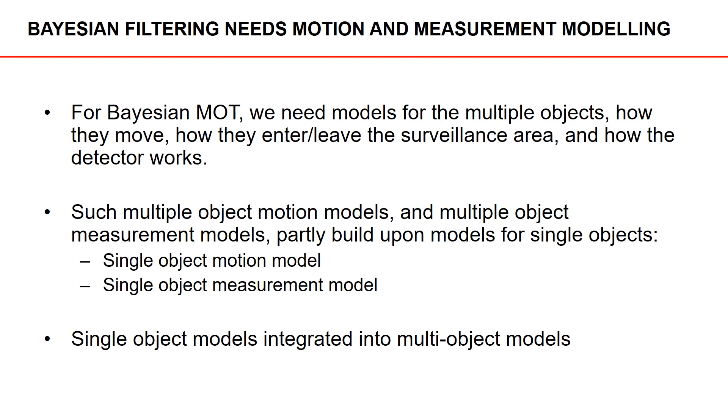To do Bayesian multi-object tracking, we need models for the multiple objects: models for how they move, how they enter and leave the surveillance area, and how the detector and sensor work. Such multiple object motion models and measurement models partly build upon models for individual objects. So it makes sense to study a motion model that describes the motion of a single object. Likewise, a measurement model that describes what kind of detections or measurements we get from an object is needed. These single object models are then integrated into the multi-object models.